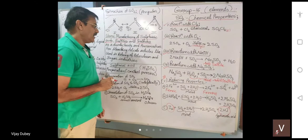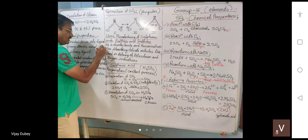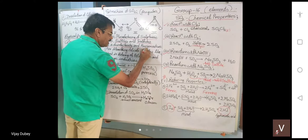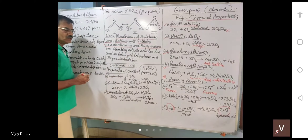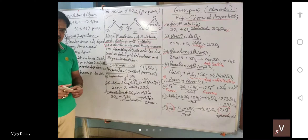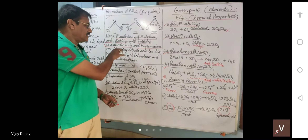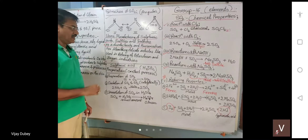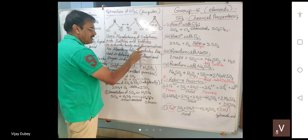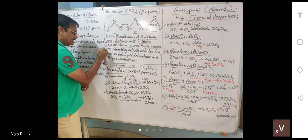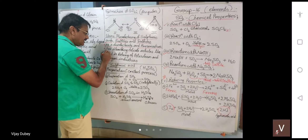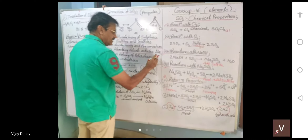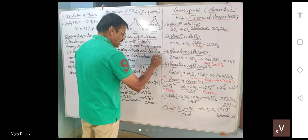Sulfur dioxide is also used as a disinfectant and preservative, and even as a food preservative. It is used for bleaching delicate articles like wool and silk, which are very delicate. If other bleaching agents are used, they may adversely affect these materials.